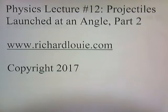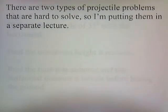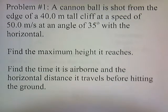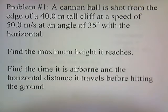Physics lecture number 12, Projectiles Launched at an Angle, part 2. There are two types of projectile problems that are hard to solve, so I'm putting them in a separate lecture. Problem number 1: a cannonball is shot from the edge of a 40 meter tall cliff at a speed of 50 meters per second at an angle of 35 degrees with the horizontal. Find the maximum height it reaches, the time it is airborne, and the horizontal distance it travels before hitting the ground.